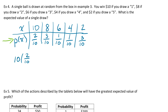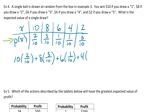We multiply through: 10 times 2/10, plus 8 times 3/10, plus 6 times 1/10, plus 4 times 1/10, plus 2 times 3/10. Put that in your calculator and add them all up — you should get 6. On average you'll win $6 from this game, because you didn't actually have to pay to play.